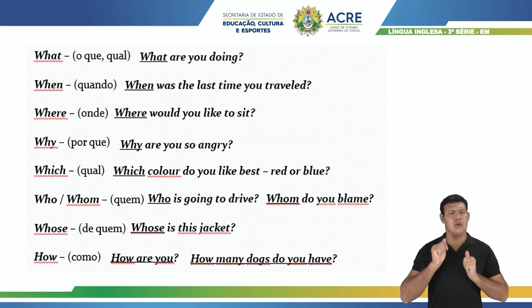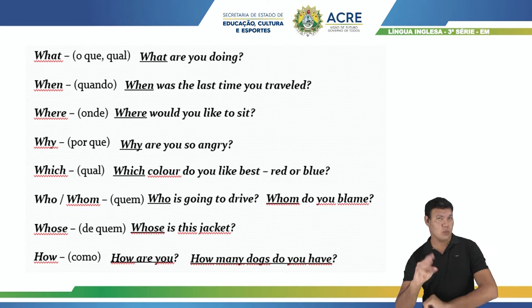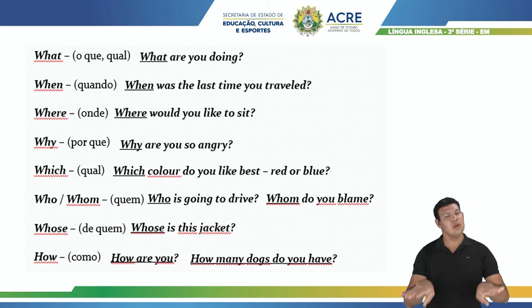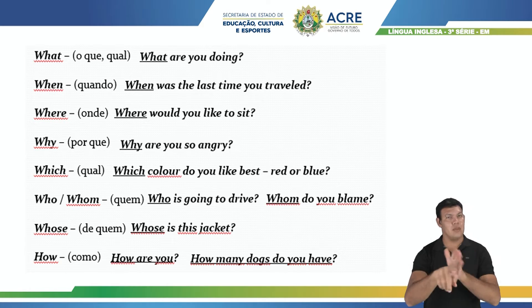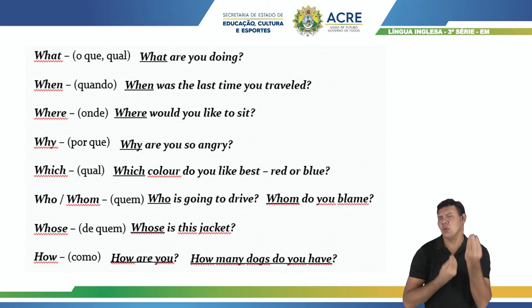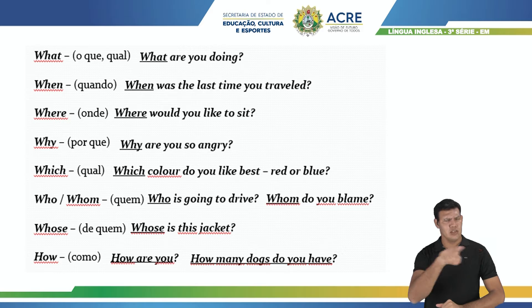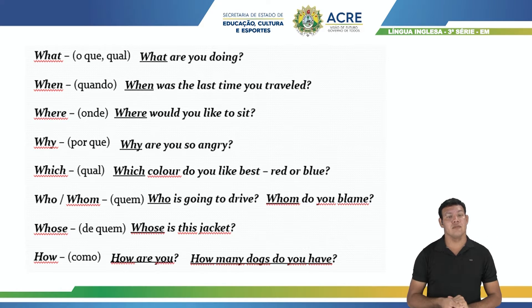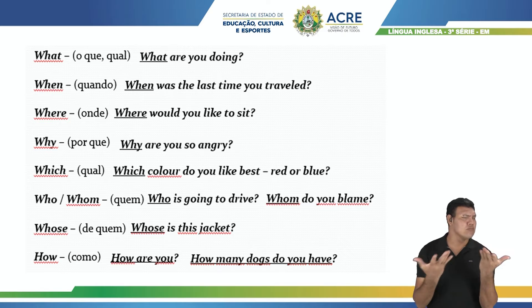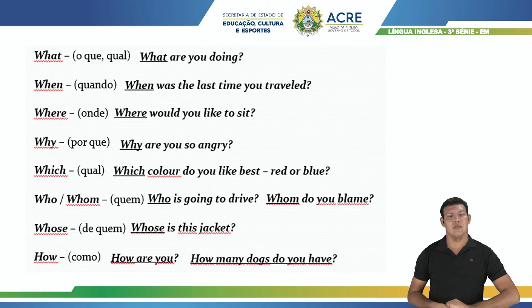E o how, que apesar de não ter o W, ele também é uma WH question. E ele significa como. How are you? A famosa frase que vocês já devem conhecer. Como você está? How também é usado para fazer perguntas sobre quantidade. Por exemplo: how many dogs do you have? Quantos cachorros você tem?